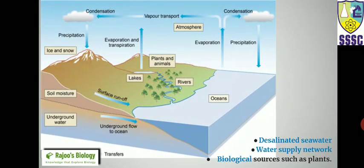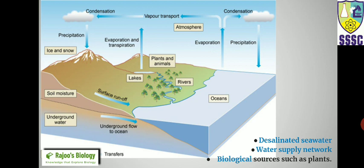Other water sources include desalinated sea water, water supply networks in cities, canals, wells, artificial lakes, and biological sources such as plants. For example, coconut water is a plant-based water source. Every plant stores water internally and releases it during active photosynthesis. Water is also stored in the atmosphere as clouds and returns as precipitation.